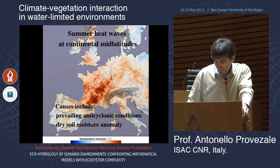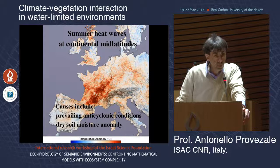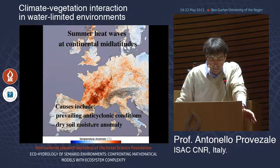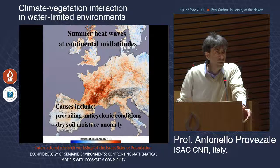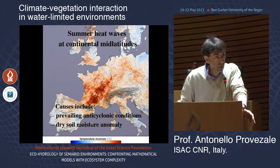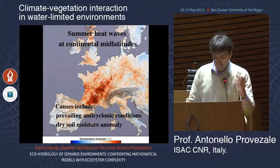The first question we looked at was summer heat waves in continental mid-latitudes, like the summer of 2003 in Europe — very hot, very dry, a lot of damage. The known causes for these summer heat waves require two conditions: anticyclonic conditions (very low input of moisture from the ocean) and a dry soil moisture anomaly at the beginning of summer. There are many papers on this issue.